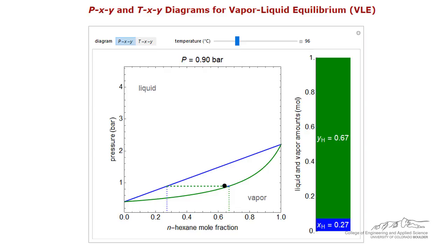We can continue to reduce the pressure at constant composition until we reach the bottom curve. This corresponds to the dew point pressure of the mixture at this temperature. The bar on the right side is now all green, indicating that everything is vapor.